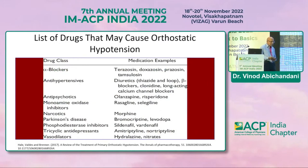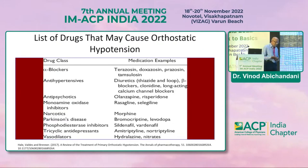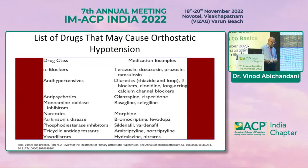Drugs that may cause or aggravate orthostatic hypotension include alpha blockers and anti-hypertensives including diuretics, beta blockers, clonidine, and long-acting CCBs. Antipsychotics, MAO inhibitors, narcotics like morphine, Parkinson's disease treatments including levodopa and bromocriptine, PDE5 inhibitors such as sildenafil, tadalafil, and vardenafil, TCAs like amitriptyline, and vasodilators like hydralazine and nitrates are also implicated.